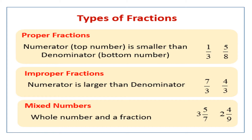And just opposite of that is improper fractions, where the numerator is larger than the denominator, or even equal to the denominator. See here: seven upon three — seven is bigger than three, and seven is written on the numerator, three below as the denominator. Then four upon three — again four is bigger than three, and four is written on the numerator. So in that case, numerator is larger than the denominator — it is improper fraction.